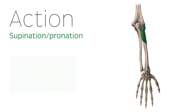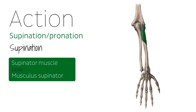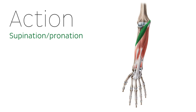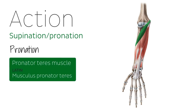We then have supination, which describes the action of turning the limb so that the palm of the hand or sole of the foot faces upward or outward. For example, when the supinator muscle of the forearm contracts, it rotates the forearm and hand so that the palm faces upwards. On the other side of the spectrum, we have pronation, which describes the rotation of the limb so that the palm of the hand or the sole of the foot faces downward and inward. For example, the aptly named pronator teres muscle carries out this very action.